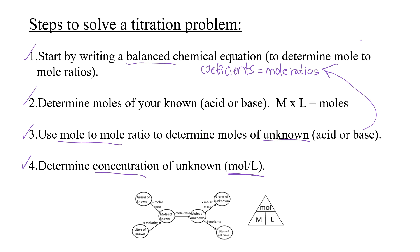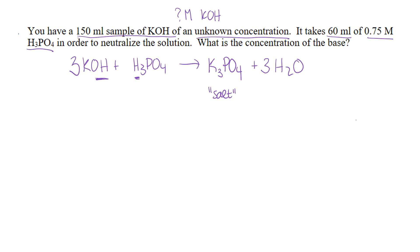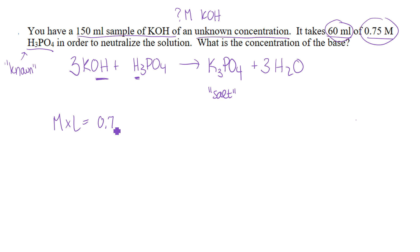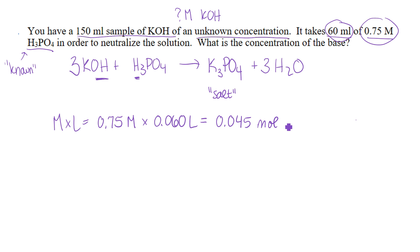Next step: determine moles of the known. Molarity times liters gives moles. I know the molarity and volume of H3PO4, so H3PO4 is my known. I take my molarity of 0.75 and convert my milliliters into liters, and that gives me moles. I'm going to label it moles of H3PO4 — it's really important to keep track, otherwise we'll get confused later on.